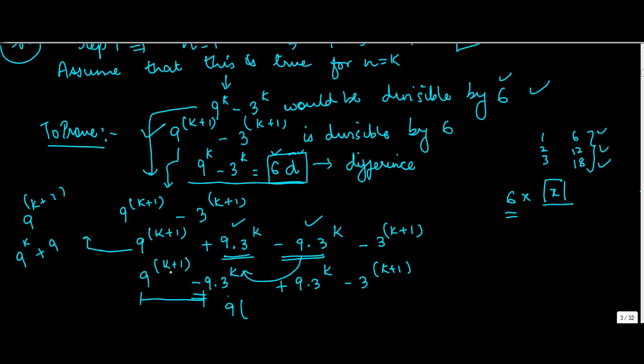So 9^(k+1) - I actually made a small error here - this is 9^k times 9. If I take 9 common from here, what I'm left with is 9^k minus 3^k.